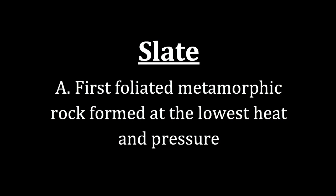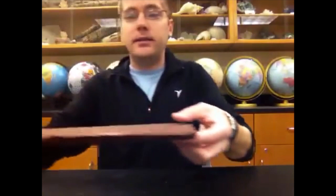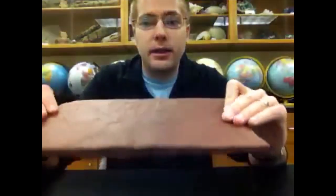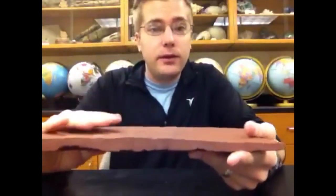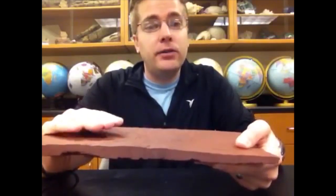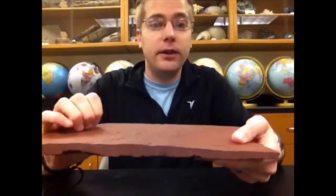Slate forms at the lowest heat and pressures. What stands out most is that slate contains slaty cleavage — nearly perfect flat planes that the rock will break along — and these are typically not oriented the same as bedding planes in the protolith. The planes are so perfectly flat that up until 1945, slate was used in chalkboards, and today it is still used as the material underneath felt in a billiards table.